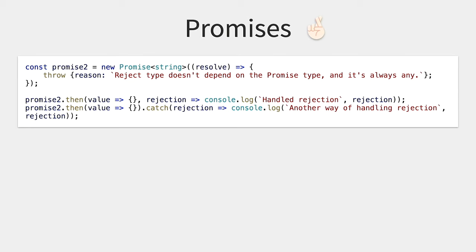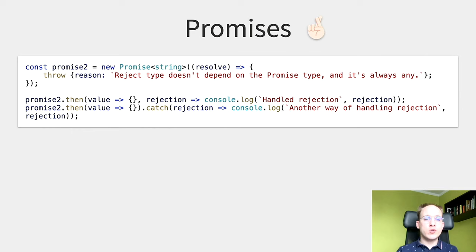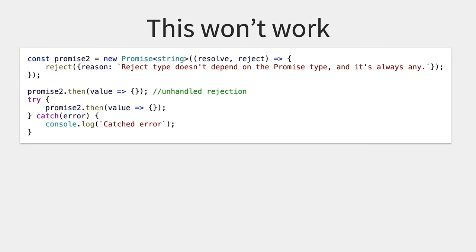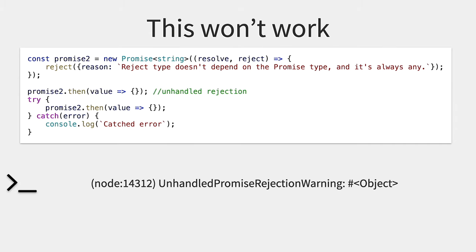Another way of signaling rejection is to throw something inside the promise — this works exactly as using reject. But keep one thing in mind: it doesn't matter whether you use reject or throw, you cannot catch promise rejection within a try-catch-finally block. This code would fail and print an unhandled promise rejection warning to the console.